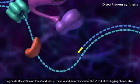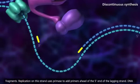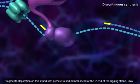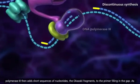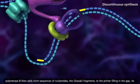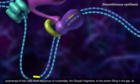Replication on this strand uses primase to add primers ahead of the 5' end of the lagging strand. DNA polymerase 3 then adds short sequences of nucleotides, the Okazaki fragments, to the primer filling in the gap.